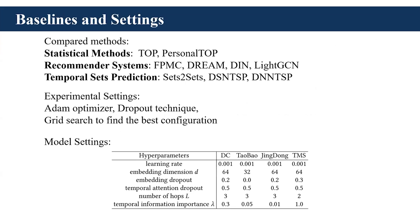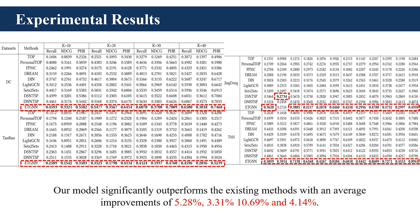We compare our method with three categories of baselines, including statistical methods, methods designed for recommender systems, and methods designed for temporal set prediction. We optimize all methods using Adam and use dropout to prevent overfitting. Grid search is also applied to find the best configuration of the model. The results on the four datasets show that our model is able to outperform existing methods with a significant margin.